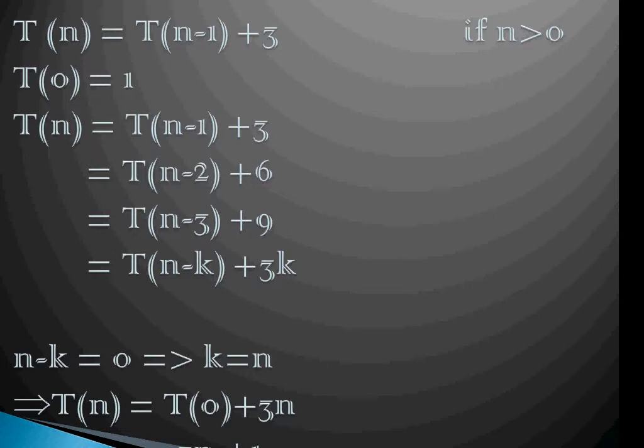And this can be further reduced to T(n-3) + 9 because T(n-2) is nothing but T(n-3) + 3. So if I have to reduce this by a generic k, then this is equal to T(n-k) + 3k.